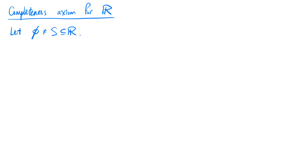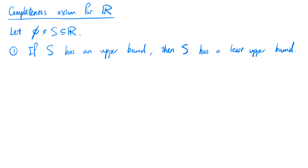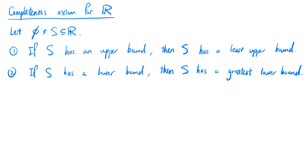Now we introduce the completeness axiom for the real numbers. Let s be a non-empty subset of the real numbers. If s has an upper bound, then s has a least upper bound. If s has a lower bound, then s has a greatest lower bound. This makes the discussion of supremums and infimums necessarily relevant for bounded sets.